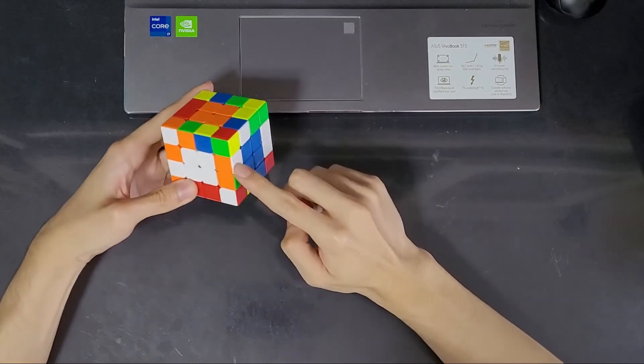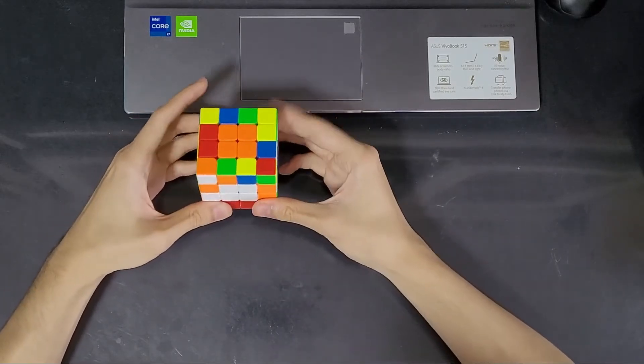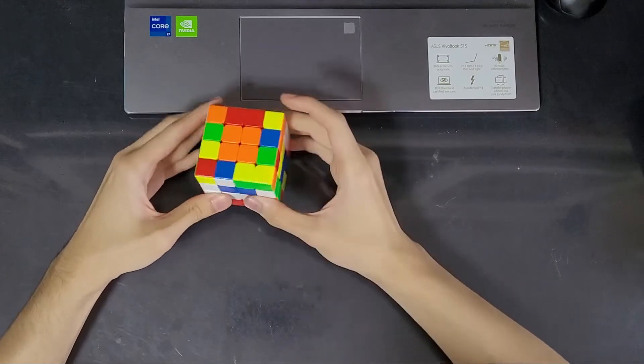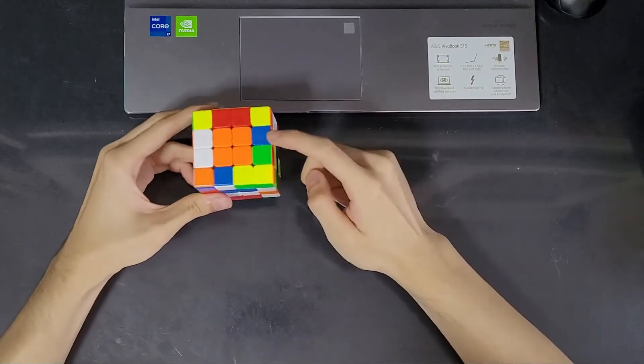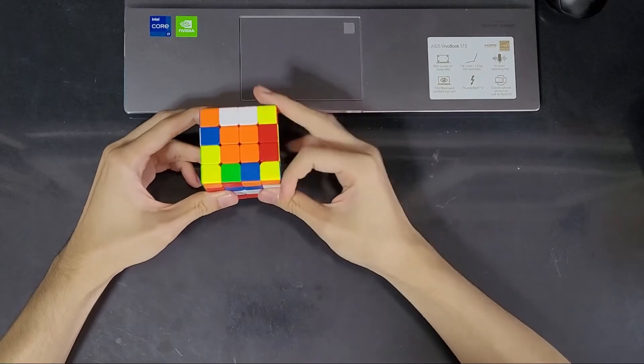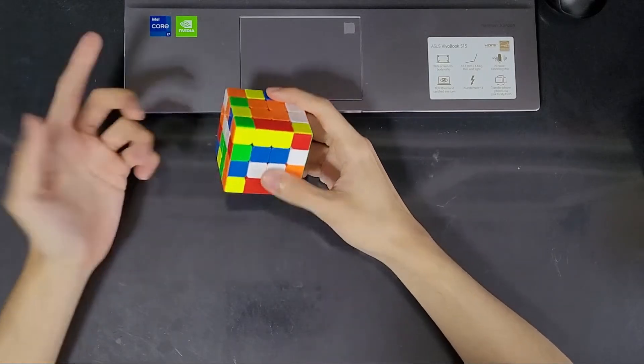So let me just do this case of white and orange. Slice, then I'll slot up, grab one of those scrambled edges and move it into that slot and then slot down and then slice back.